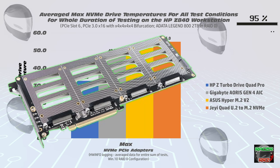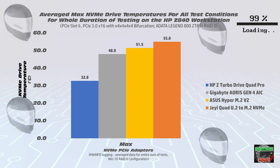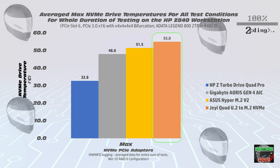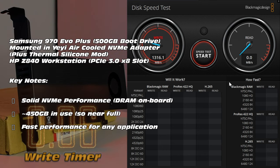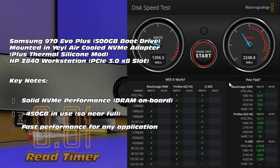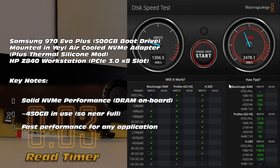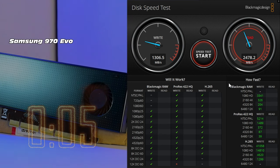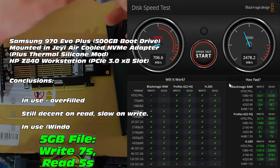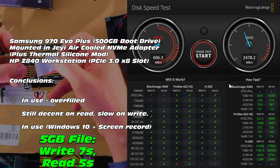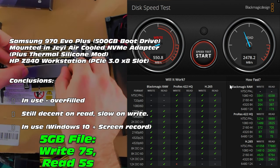Last place on thermals goes to the JHE Quad U.2 to M.2 adapter — not too surprising, as there is no thermal management whatsoever: no thermally conductive silicone, no fan, and not much of a heatsink either. However, in a related video we've taken a similar JHE adapter, added thermally conductive silicone, and massively reduced its operating temperature — nearly matching the Gigabyte Aorus — so this could still be a viable solution.